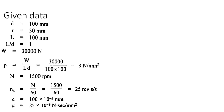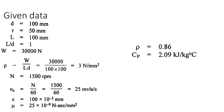Speed: ns = N/60 = 1500/60 = 25 rev/s. Clearance: 100 microns; since 1 micron = 10⁻³ mm, c = 100 × 10⁻³ mm. Viscosity: 25 cP; multiplying by 10⁻⁹ converts cP to N·s/mm², so mu = 25 × 10⁻⁹ N·s/mm². Specific gravity and specific heat are also given in the problem data.